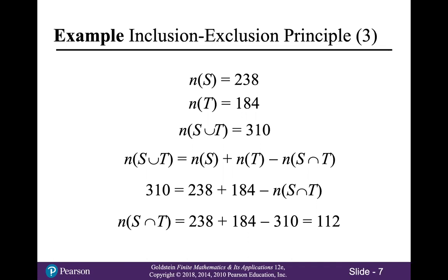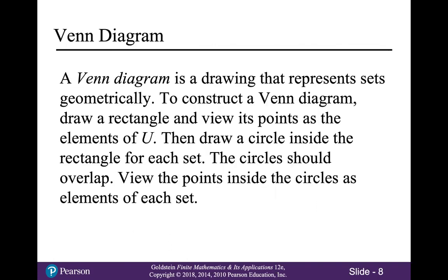In the next section, I'll show you another way to do this problem using a Venn diagram. A Venn diagram is a drawing that represents sets geometrically. To construct a Venn diagram, draw a rectangle and view its points as the elements of the universal set U. Then draw a circle inside the rectangle for each set. These circles should overlap. View the points inside the circles as elements of each set.